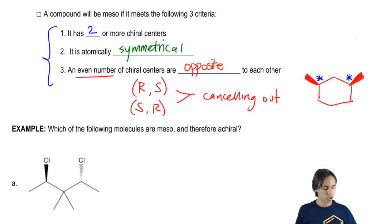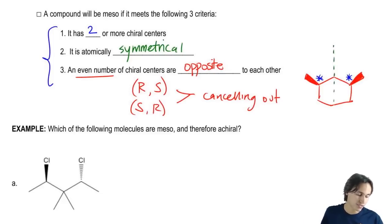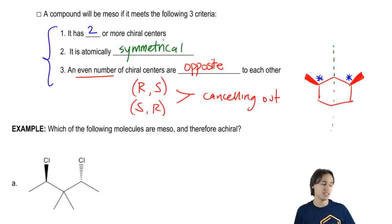Is this molecule chiral? No it's not, because if you look, it actually has an internal line of symmetry. If it has an internal line of symmetry, that means it's achiral.